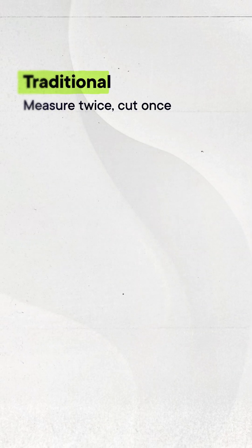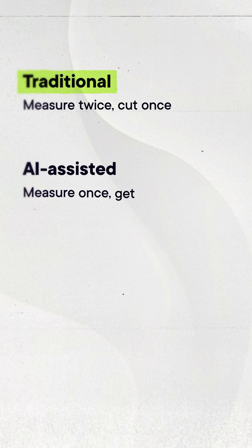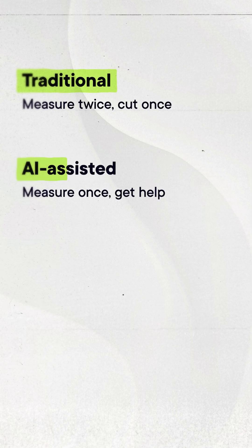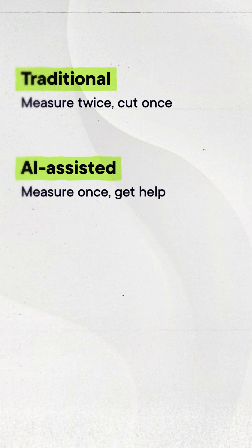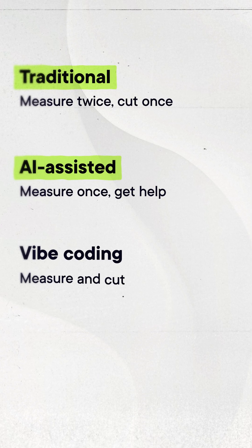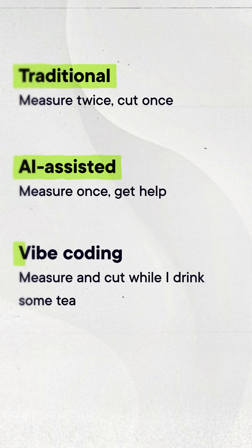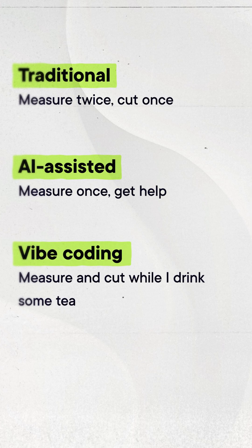To coin an old saying: traditional coding is 'measure twice, cut once.' AI-assisted development is 'I'll measure and then get an AI's help to cut it.' Vibe Coding is 'I'll ask the AI to measure and cut it while I drink some tea.'